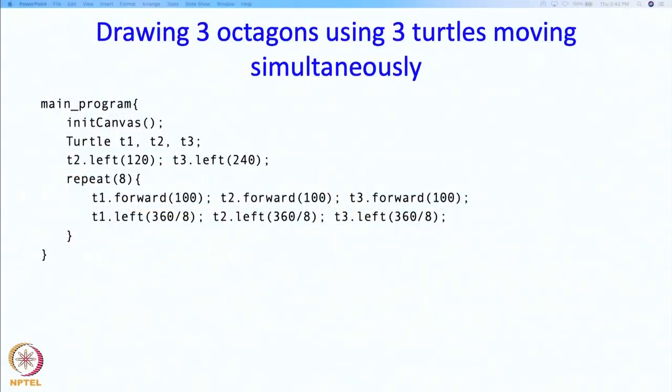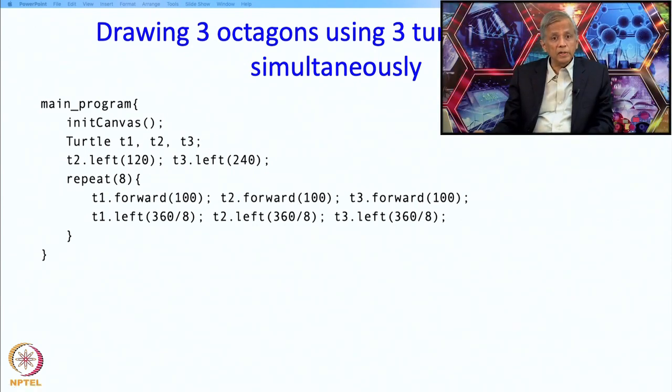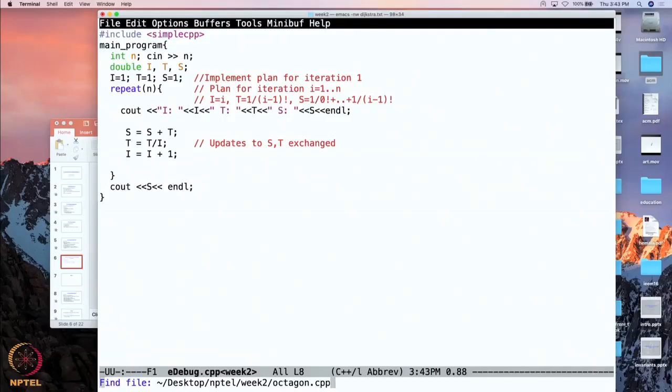Here is a program where the first statement is initCanvas to create the canvas. Then we create 3 turtles at the center facing right. We tell different things to the turtles: t1 leaves as is, t2 turns left by 120 degrees, t3 turns left by 240 degrees. Now we get the turtles to move—all move forward and turn left by 360/8 degrees. Each one is drawing an octagon. Let's execute it.